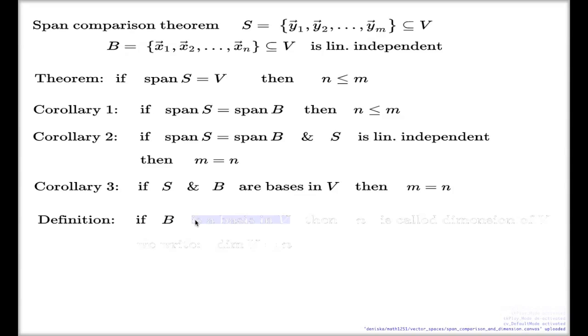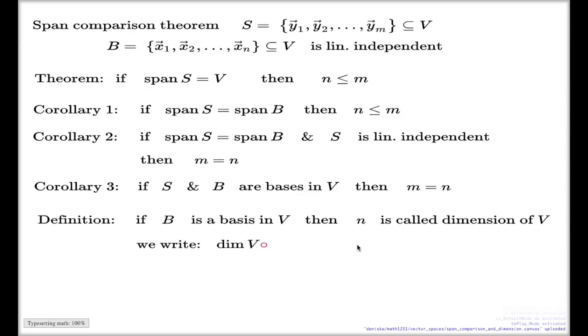If I have a basis in the vector space, then the number of elements is called the dimension of that vector space. And we normally write this with the writing like this, dim of V is N.